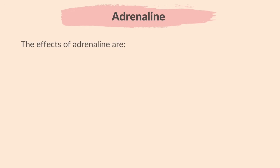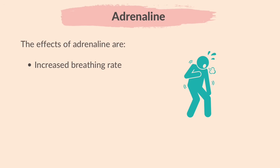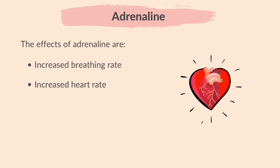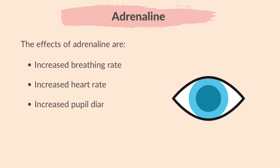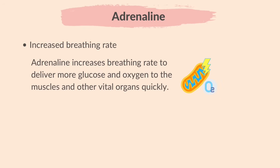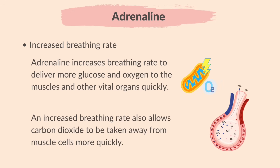The body undergoes various changes to prepare for movement in response to a stressor. The effects of adrenaline include increased breathing rate, increased heart rate, and increased pupil diameter. Adrenaline increases breathing rate to deliver more glucose and oxygen to the muscles and other vital organs quickly. These are necessary for respiration to release more energy for the fight-or-flight response. An increased breathing rate also allows carbon dioxide to be removed from muscle cells more quickly.